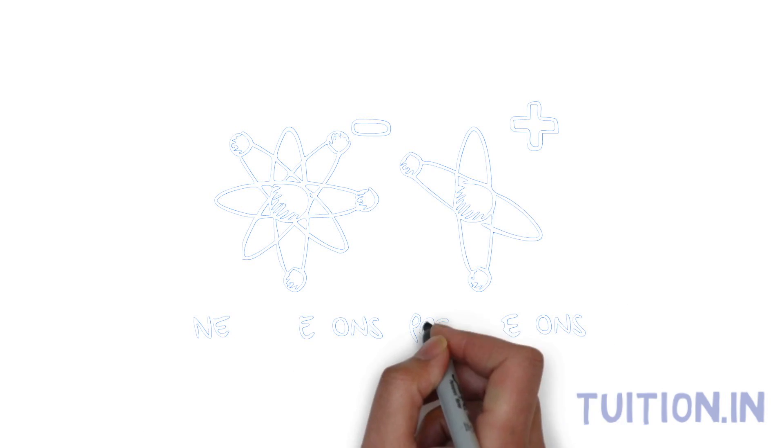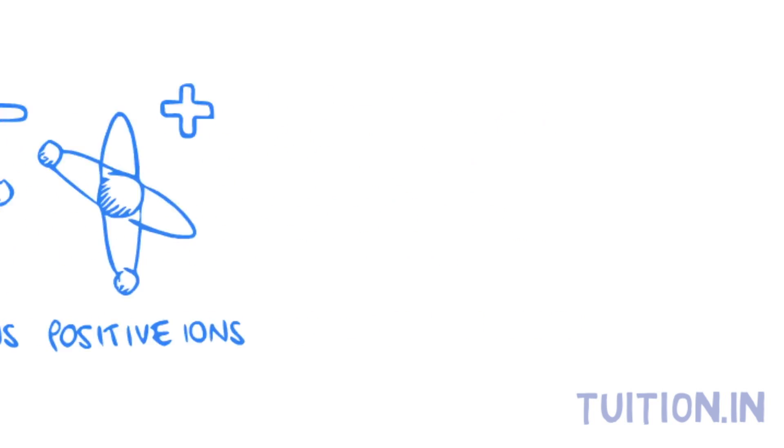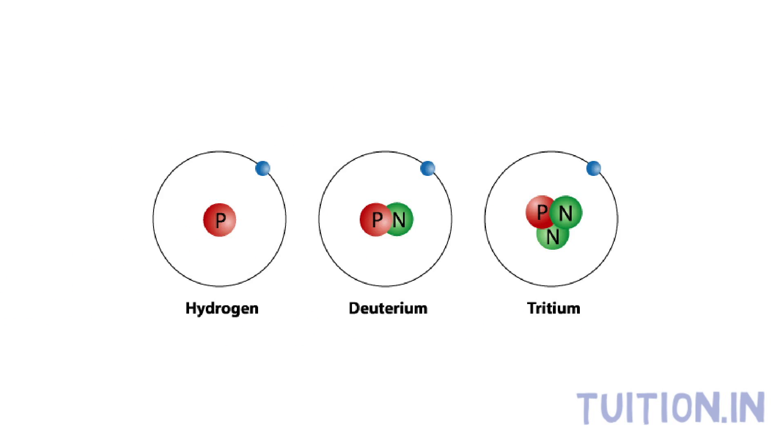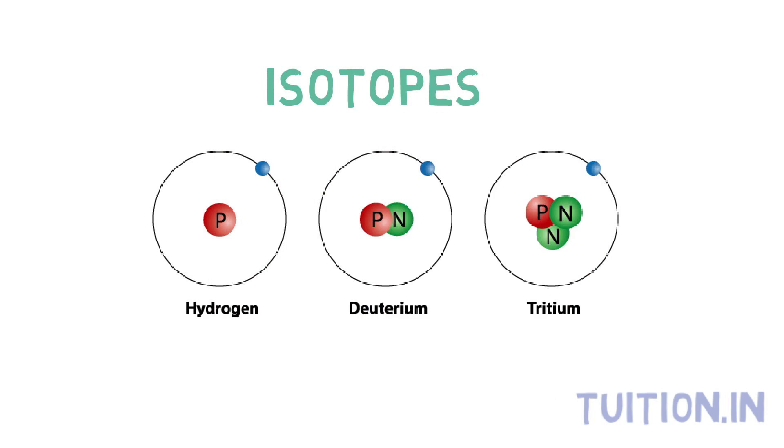Individual atoms can lose or gain electrons to form ions. Atoms of the same element can also have extra neutrons. These are called isotopes. Despite having different neutron counts, isotopes retain their element's chemical properties because the number of protons remains constant.